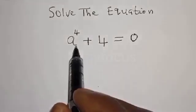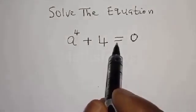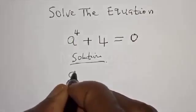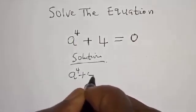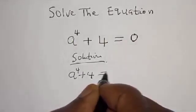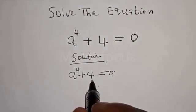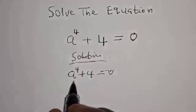Solve the equation a raised to the power 4 plus 4 is equal to 0. For a raised to the power 4 plus 4 equals 0, we are going to manipulate this equation such that it will be easier to work with.